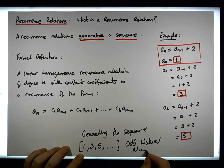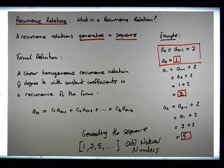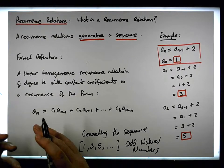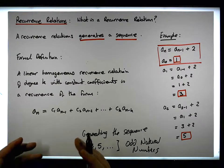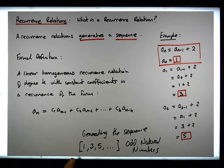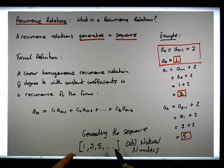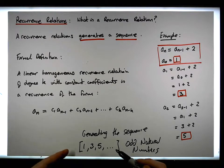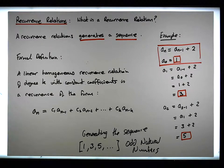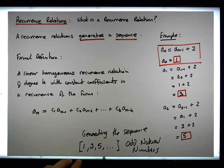You can actually see now that when it came to generating functions, we had a way to define the odd natural numbers with respect to power series, and from the power series we constructed the generating function. Now what we have is the odd natural numbers defined via this recurrence relation.